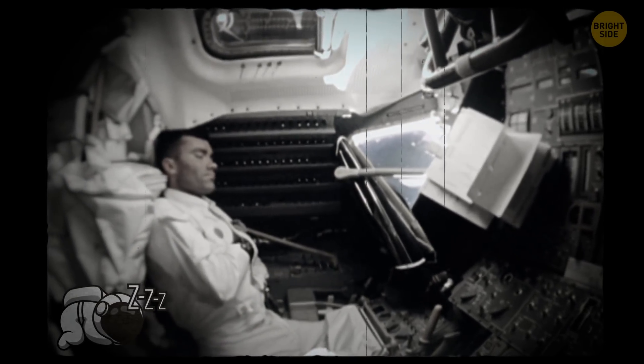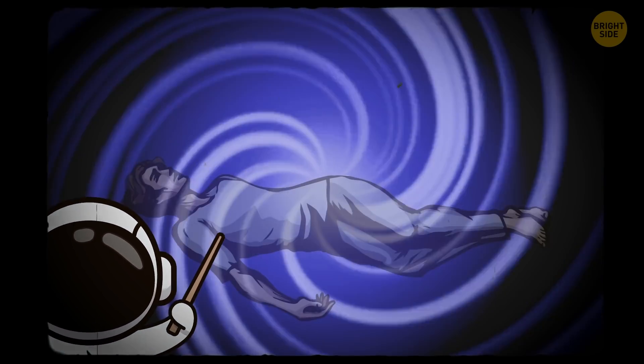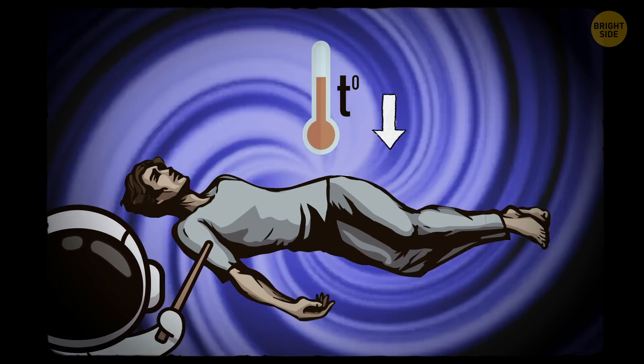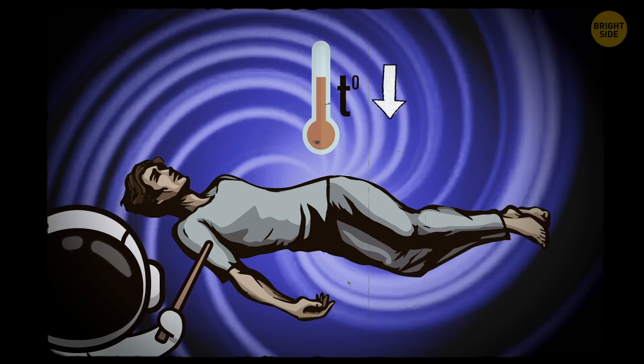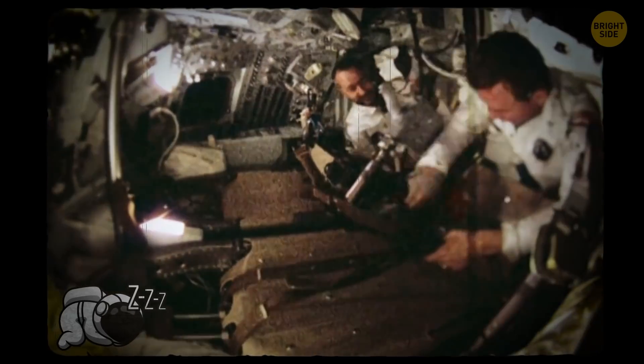A sleep mask is a must, of course. Another problem is zero gravity. Also, when we lie down relaxing, our body temperature decreases, which is important for a quality sleep. But it's not possible in space. Some astronauts attach themselves to the walls in their sleeping bags, while others prefer to float.